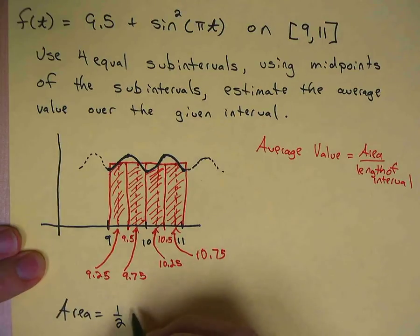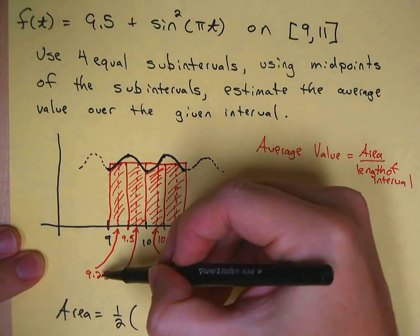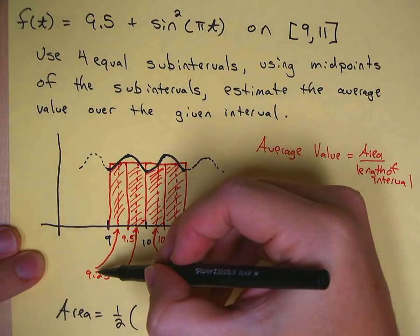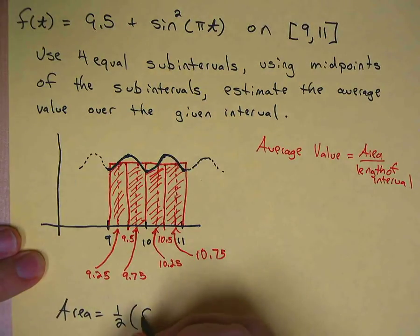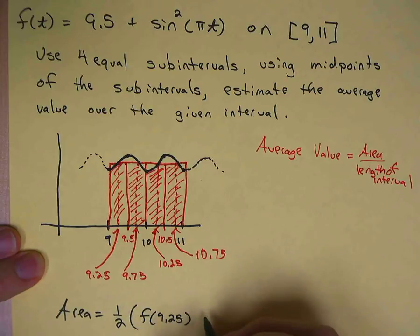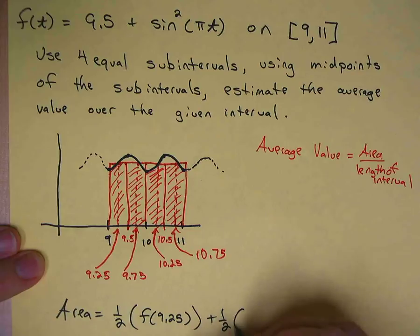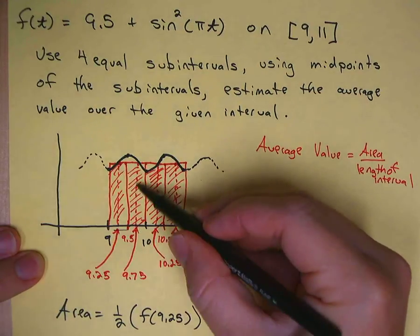So a half times the height of this rectangle, which is the height of the function at 9.25, so I'll say f of 9.25. Plus half times this one, the height there is the height of the function at 9.75, so f of 9.75.